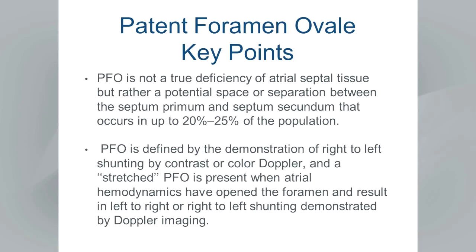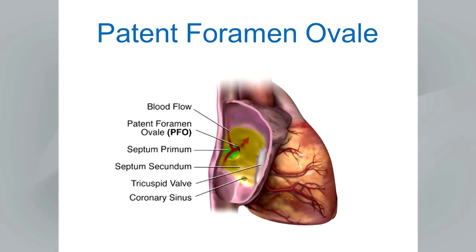PFO is not a true deficiency of atrial septal tissue but rather a potential space or separation between septum primum and septum secundum. It is incredibly common, occurring in about 20–25% of the general population. It is defined by the demonstration of color Doppler flow — intracardiac shunting from right to left or left to right — or when contrast injected into the right heart passes into the left heart. A stretched PFO is present when left atrial pressure exceeds right atrial pressure, causing left-to-right color Doppler flow — effectively acting as a functional atrial septal defect.